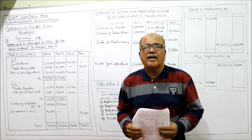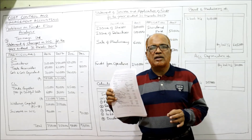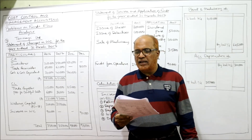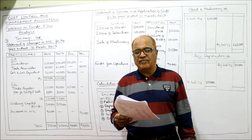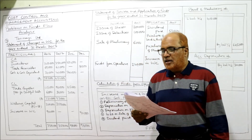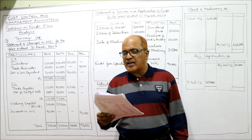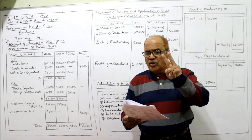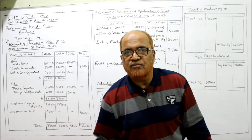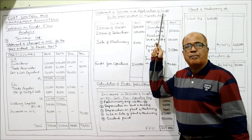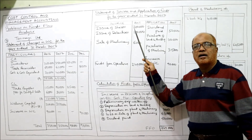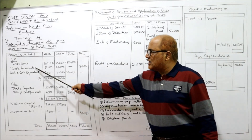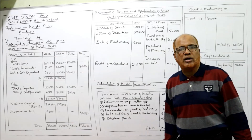Before starting the seventh problem, I expect my viewers to have a printout of the problems given in the link under my description. The seventh problem: the following are the summarized balance sheets of Tanmai Limited as on 31st March 2016 and 31st March 2017. Share capital last year six lakh, current year eight lakh — two lakh rupees shares issued. The issue of shares will be taken under source side. But first, I suggest you prepare the statement of changes in working capital by taking current assets and current liabilities.